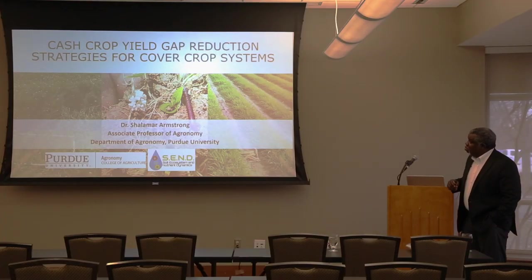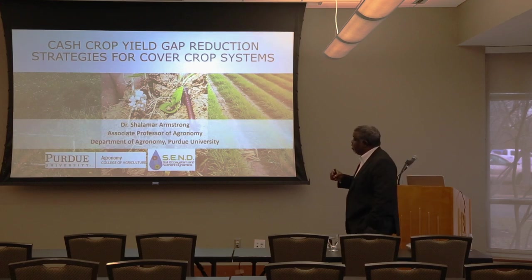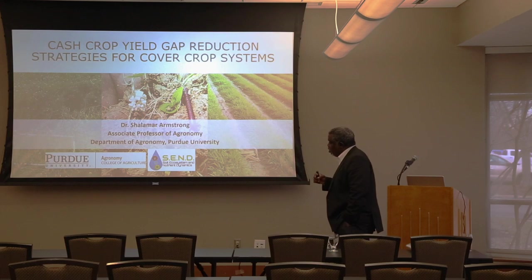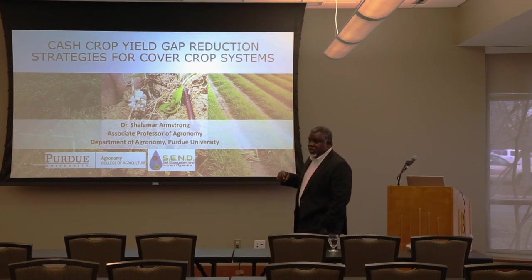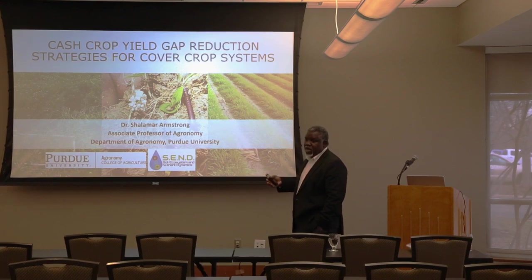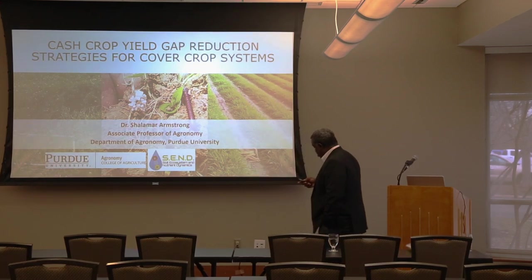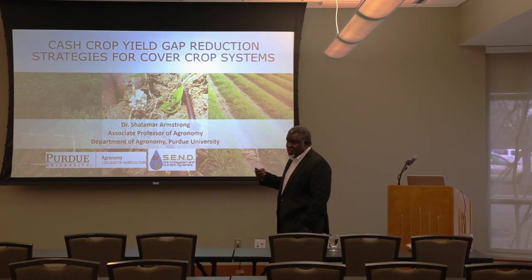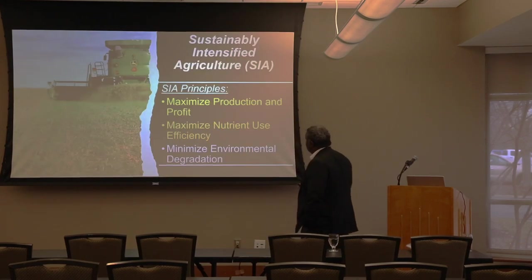I'm going to talk about cash crop yield gap reduction strategies — in other words, strategies to reduce the yield lag that we normally see for corn planted behind cereal rye, which is the most common cover crop. I'm going to talk from the perspective of conventional agriculture, but then make points that are applicable to organic systems.